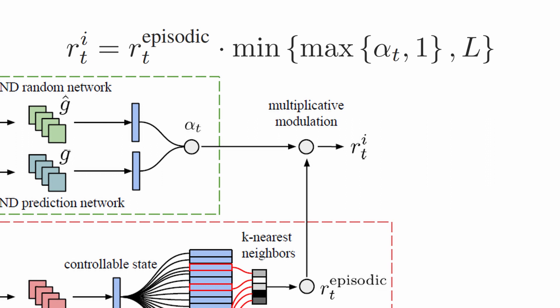It is nothing but the normalized mean-square error between the two predictions of random network distillation. So over time the modulation will vanish and the intrinsic reward will be based only on the episodic reward.